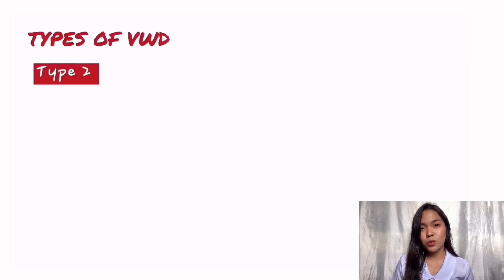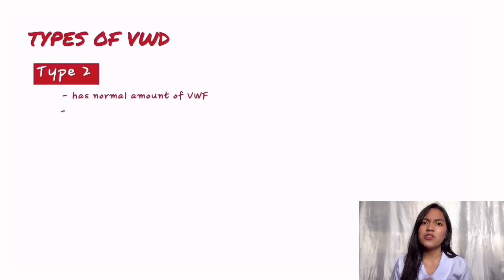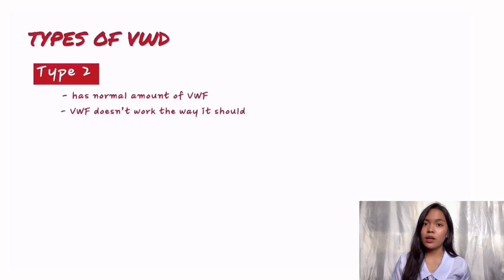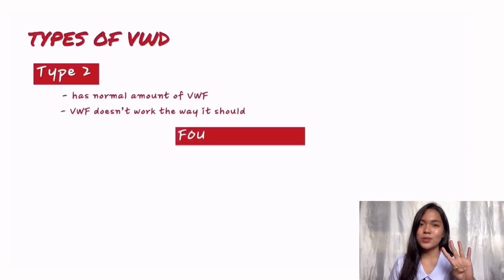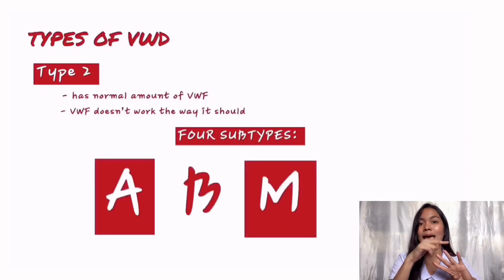For type 2, although the body makes normal amounts of von Willebrand factor, the factor doesn't work the way it should. Type 2 is further broken down into four subtypes: type 2A, 2B, 2M, and 2N.